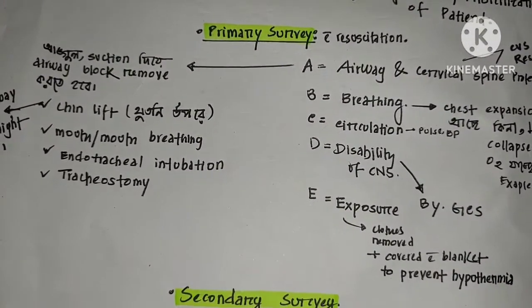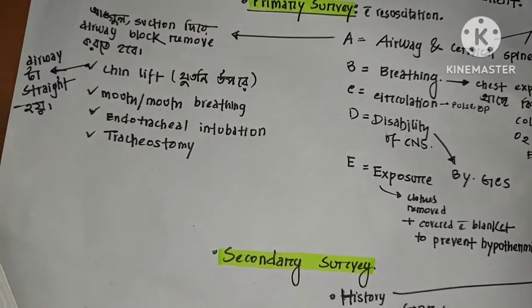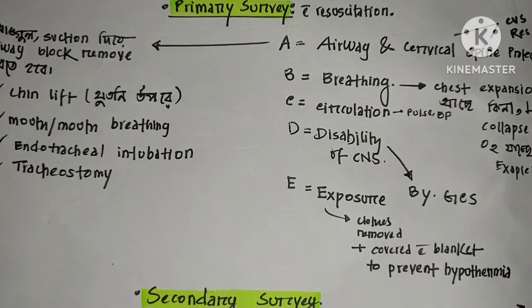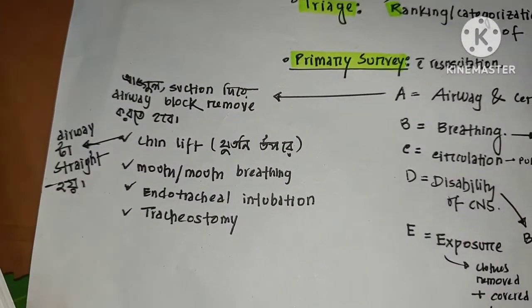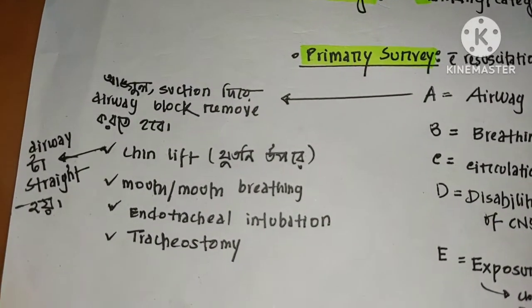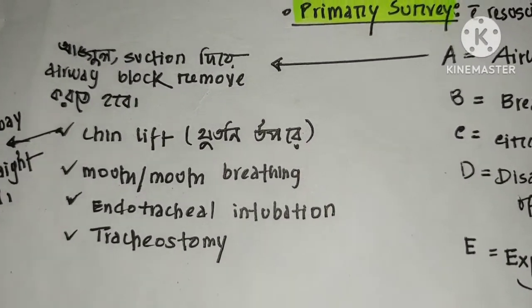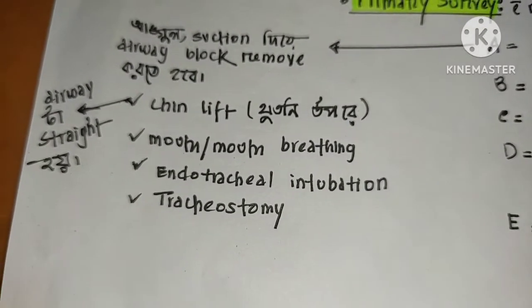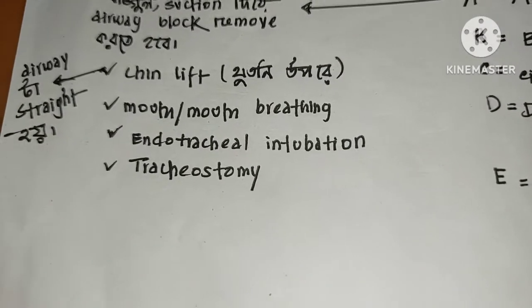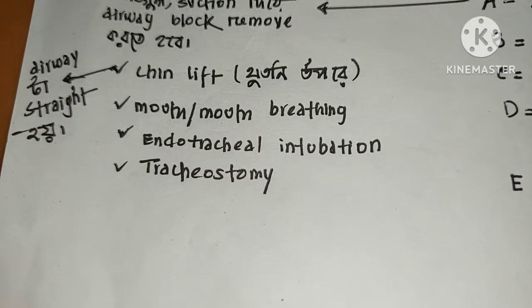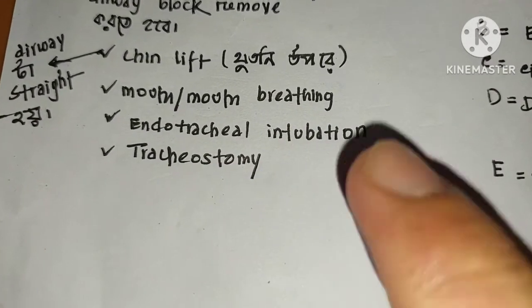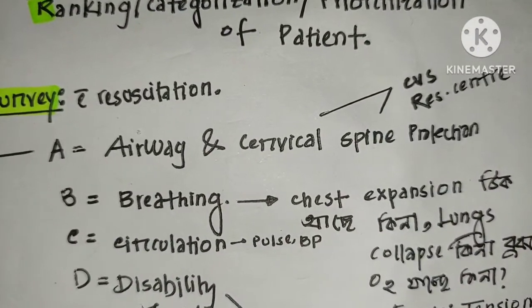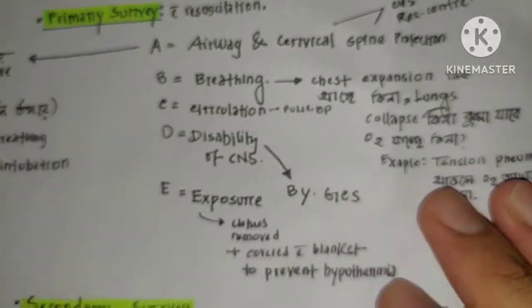Airway means we keep the airway open. If the airway is blocked, we perform mouth-to-mouth breathing or use airway-opening maneuvers. We look at breathing by observing the patient's chest — if the chest expands or collapses, we assess their breathing status.